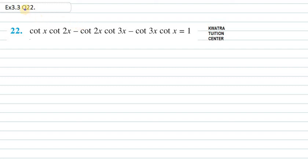Hello everyone, let's start with question number 22. In this it says cot x cot 2x minus cot 2x cot 3x minus cot 3x cot x equal to 1.